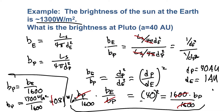That gives us 0.81 watts per square meter. So 1300 watts per square meter is the solar constant — the brightness of the sun as seen from Earth. From Pluto, it's less than a single watt per square meter. That's why it gets so much colder as you move toward the outer part of the solar system: the energy those planets receive goes down as one over the distance squared, and Pluto is way out there at 40 astronomical units.